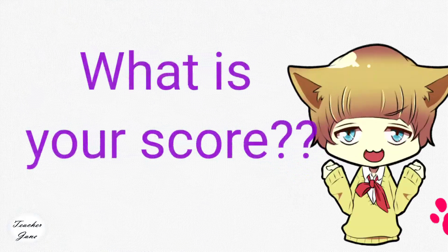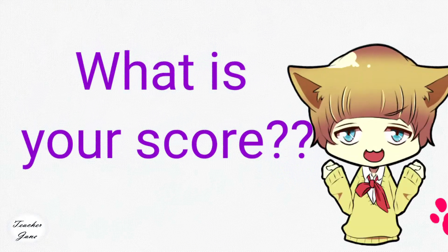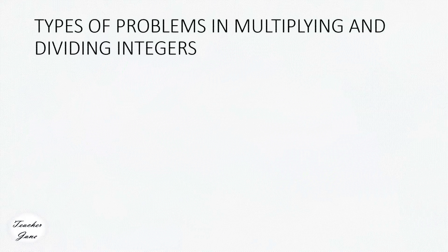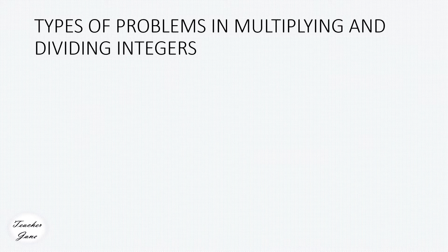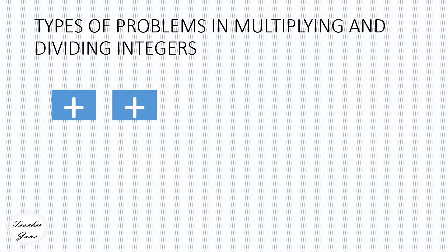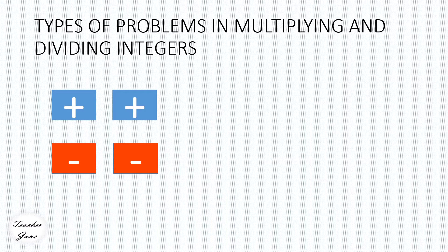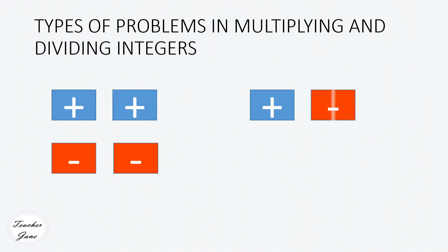How many did you get correctly? There are two types of problems in multiplying and dividing integers, and they are like signs and unlike signs integers.